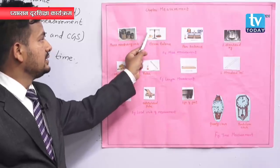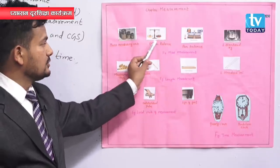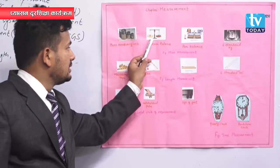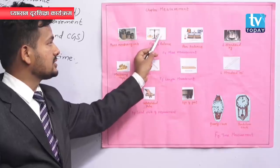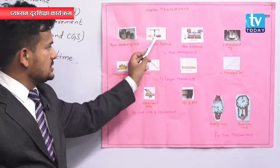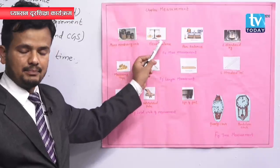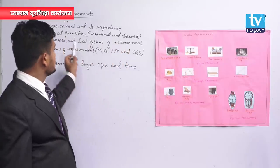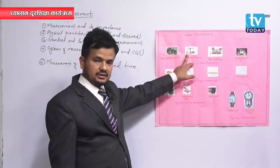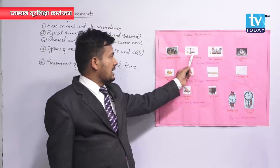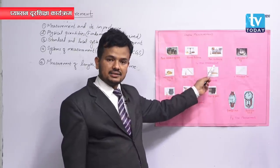In one pan you keep the standard unit and in the other pan you keep the unknown quantity of matter. In this figure, you can see one standard kilogram — that is the already known value — and on the other side we have placed some apples, whose amount is unknown. The balance shows equilibrium, and we can find the amount of apples. This is measurement: the comparison of an unknown quantity with a known standard quantity. There are also other balances like pan balance and kitchen balance.